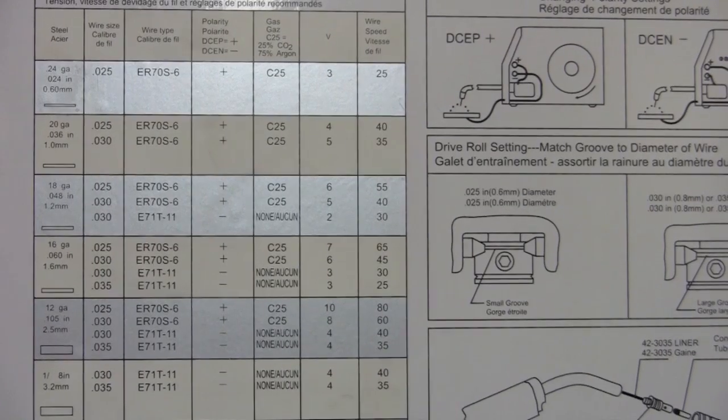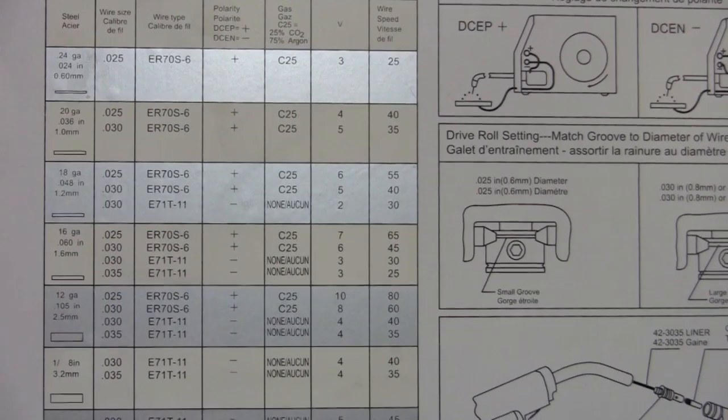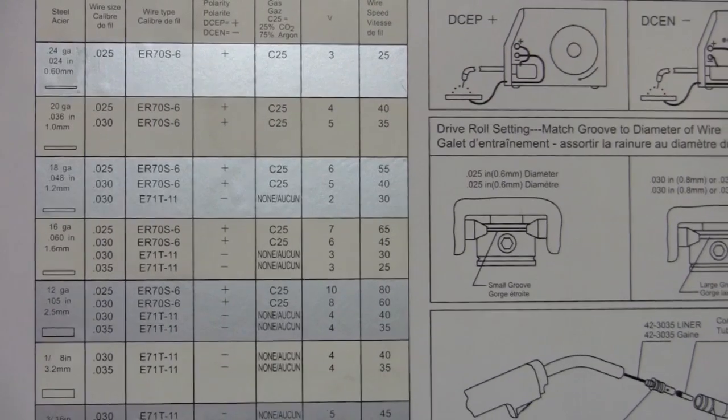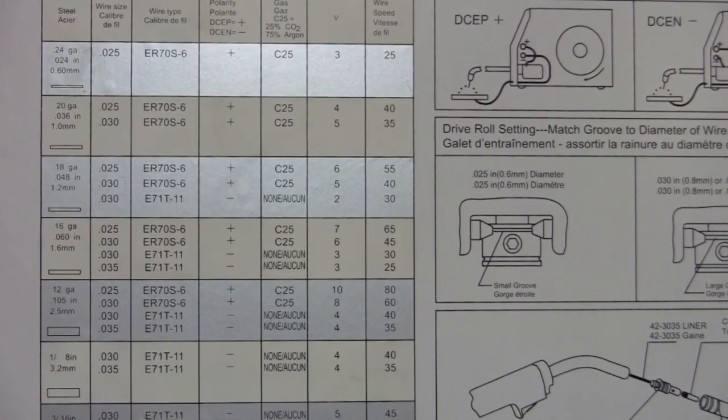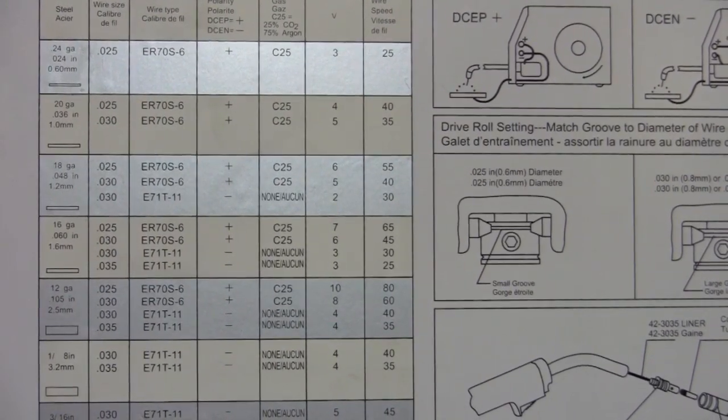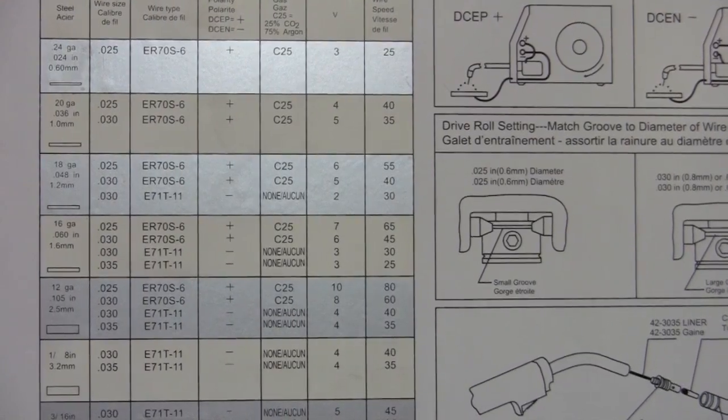Another thing I really like about this welder is on the inside cover, it makes it real simple to set it up. It gives you what shielding gas you're using, the metal thickness, and the type of wire you should use to weld that. Set up with some 1/8 inch hot rolled right now. The machine suggests I should use 30 thousandths wire. I don't have any, so I'm going to use 25 thousandths, and I'm getting pretty good results with it.